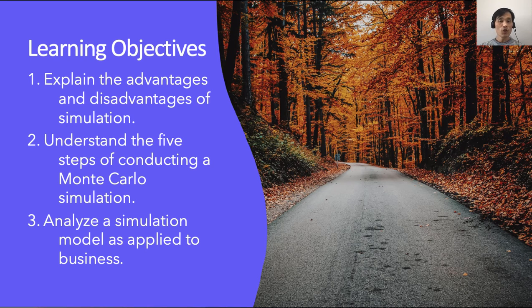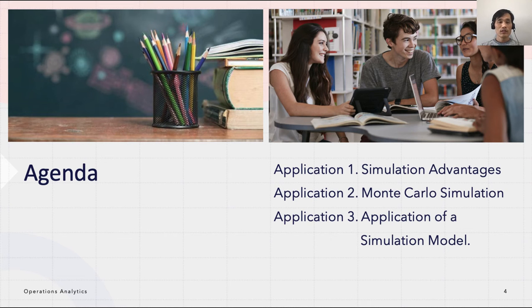We have three learning objectives. The first is to explain the advantages and disadvantages of simulation. Second, understand the five steps of conducting a Monte Carlo simulation. The third is to analyze the simulation model as applied to business. The agenda covers advantages and disadvantages of simulation, an introduction to Monte Carlo simulation, and applying this method to various business situations.